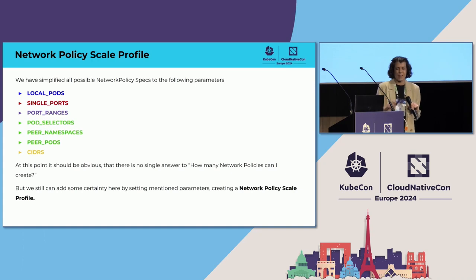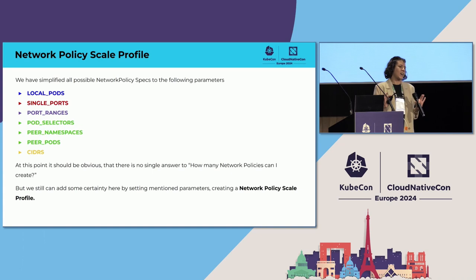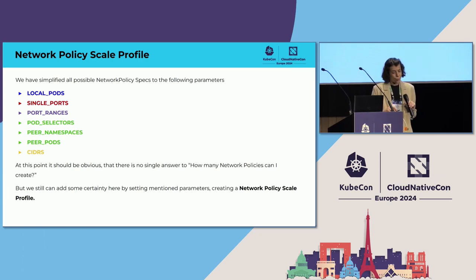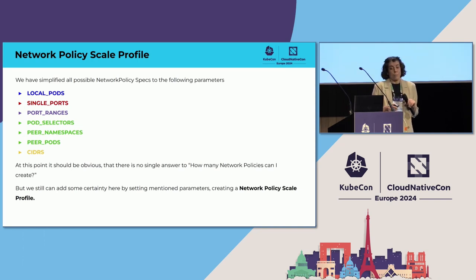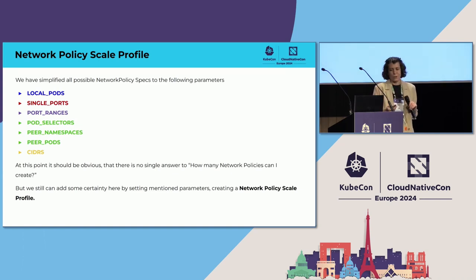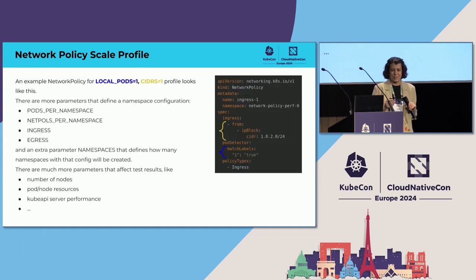To sum this up, the network policy scale profile has seven parameters in total. That is what defines how the network policy YAML will look, and it is good enough to understand what is the scale impact of a given network policy. At this point, it should be obvious that there is no single or simple answer to 'how many network policies can I create,' but we can still add certainty by using this network policy scale profile.